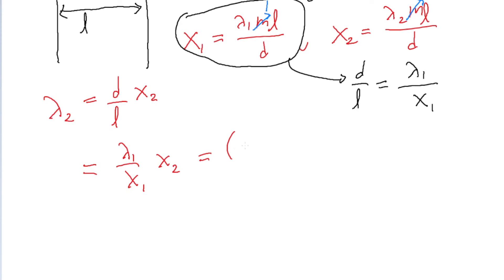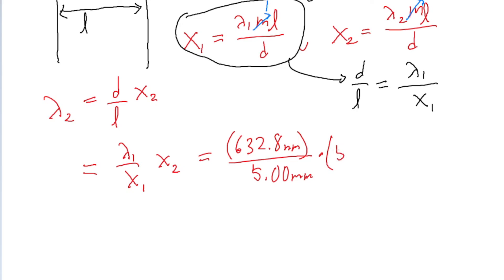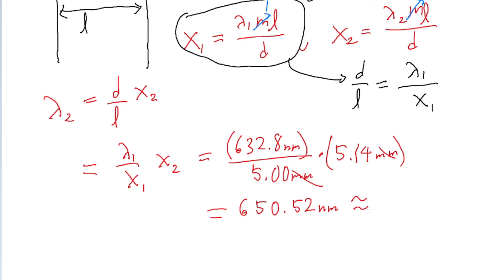The wavelength of the first laser is given as 632.8 nanometers, divided by x sub 1 which is 5 millimeters, all multiplied by x sub 2 which is 5.14 millimeters. We don't need to do unit conversion because the millimeters cancel out, giving us a value in nanometers. This gives us a wavelength of 650.52 nanometers, or rounded to about 651 nanometers.